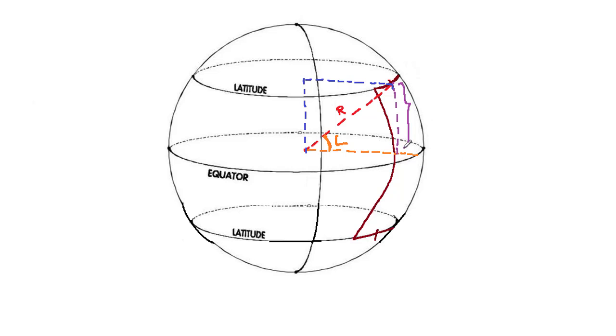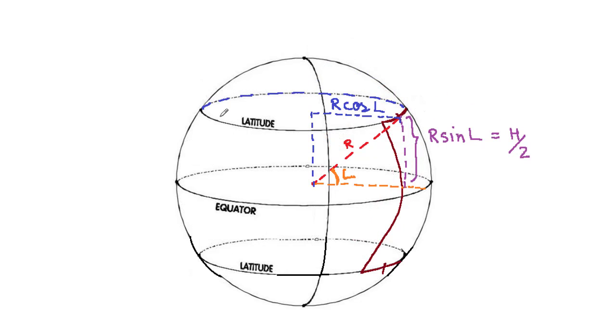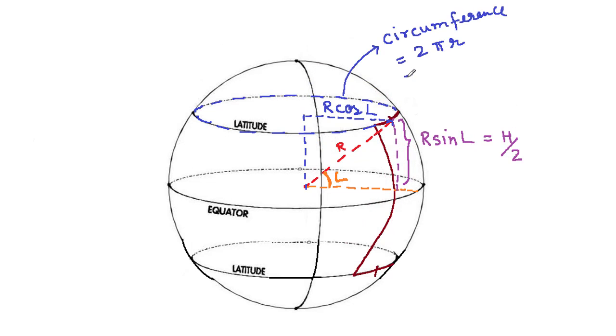Now if we draw a perpendicular we get r times sine of l as the vertical height of this latitude from the equator. Similarly, r times cos l is the radius of this latitude and so the circumference of this latitude is 2π times r times cos l.